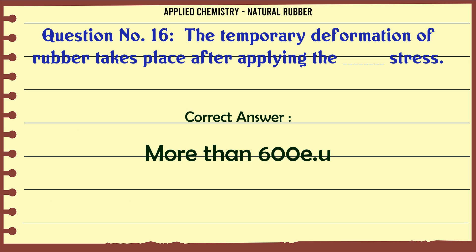The temporary deformation of rubber takes place after applying the stress: A) 600 E.U., B) more than 600 E.U., C) 500 E.U., D) more than 500 E.U. The correct answer is more than 600 E.U.